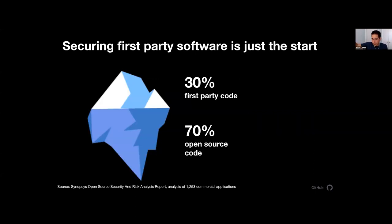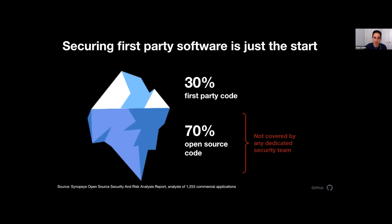Securing first-party software is really just the beginning. We estimate about 30% of your application is first-party code and 70% is actually open source code. That means you are literally giving production-level access to a person who does not work for your company, who you've never met. That 70% is not being covered by any dedicated security team.